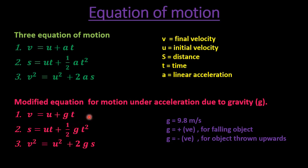The value of acceleration due to gravity, g, is normally taken as 9.8 m/s². This acceleration due to gravity is a vector quantity, so it may be positive, negative, or sometimes zero. The value of g is taken as positive when the object is falling towards the Earth's surface, and the same value of g is taken as negative when the object is thrown upward.